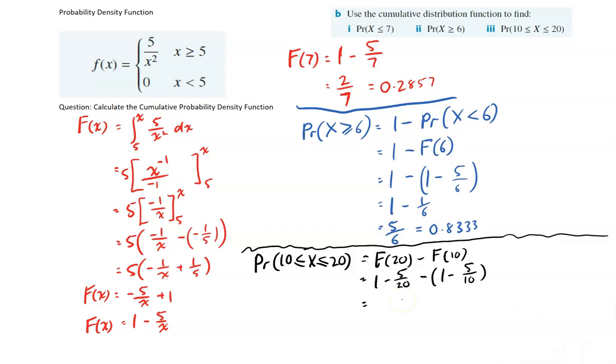And we sub both of those numbers into our formula. And once I've subbed both of those numbers in, I do my calculation, and I'll get one quarter, which of course is equal to exactly 0.25.